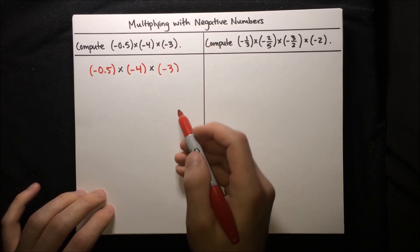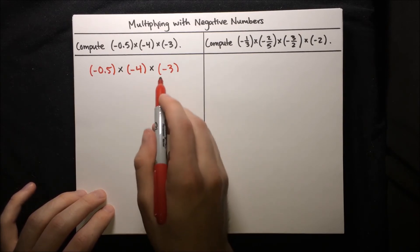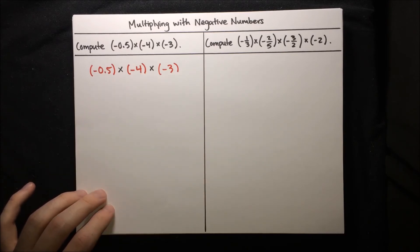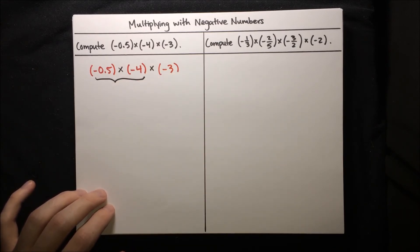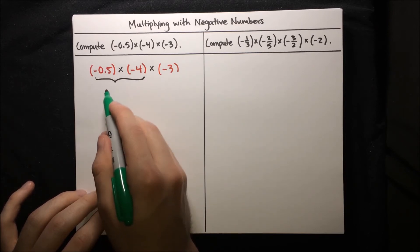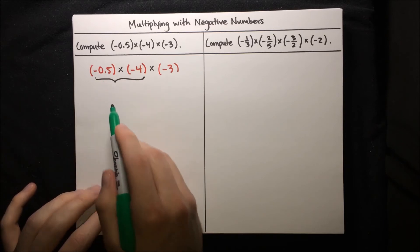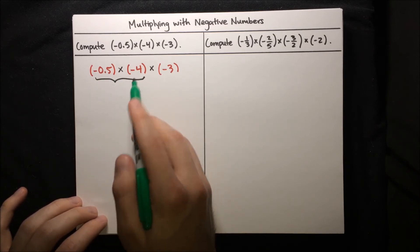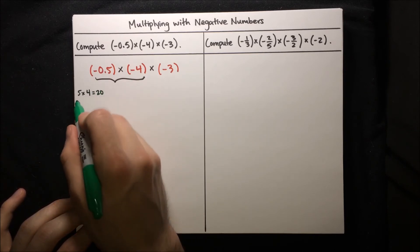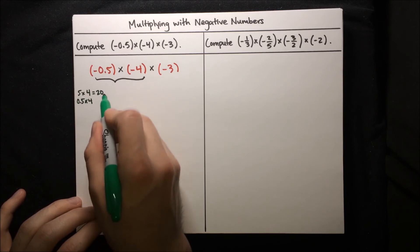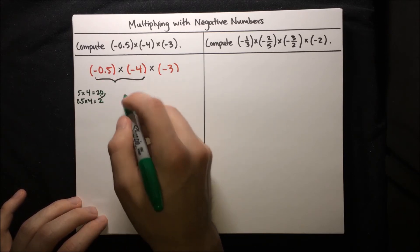We'll proceed from left to right, multiplying pairs. Focus on the first two: negative 0.5 times negative 4. This is negative times negative, so the result is positive. To find 0.5 times 4, think of 5 times 4 which is 20, then move the decimal one place left to get 2. So negative 0.5 times negative 4 equals positive 2.